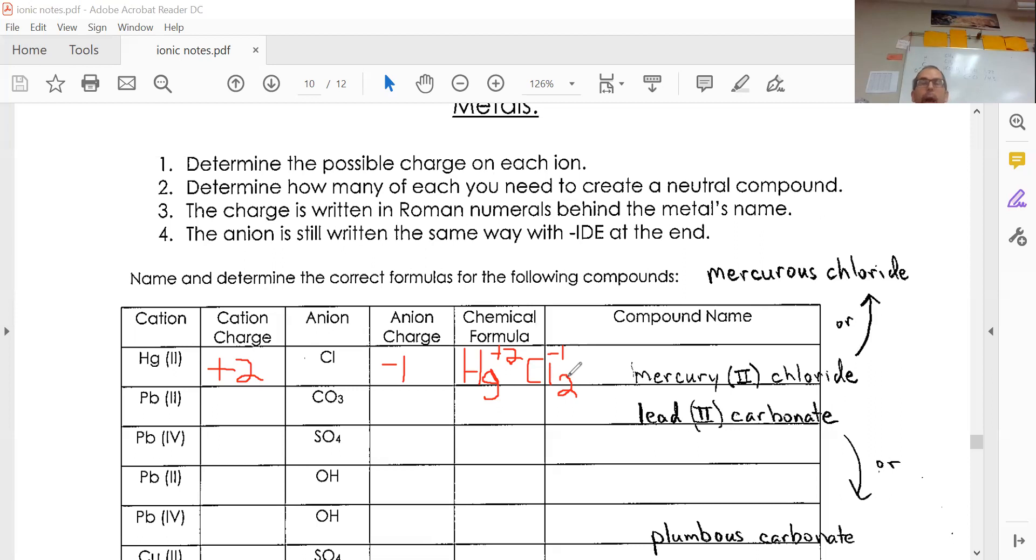Do you need the charges? No, but you can leave them in there because it's just showing work. If we have to name this, we just want to be specific so we don't confuse it with mercury one or another mercury. I just say mercury roman numeral two chloride. There is a latin way—you'll see mercurous or mercuric for plus two on the common ion chart.